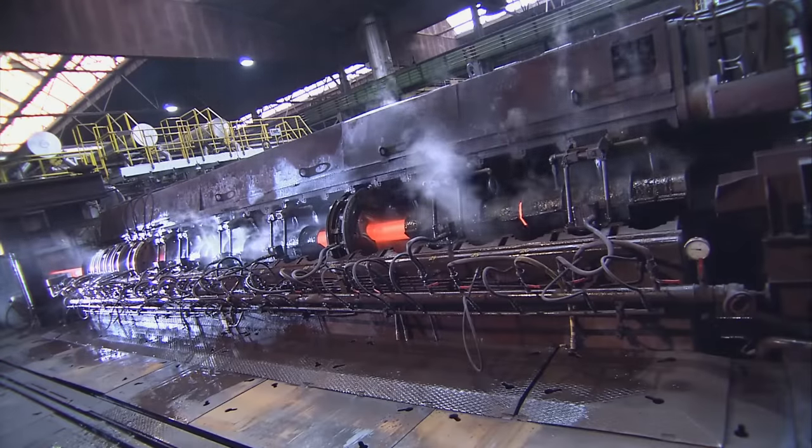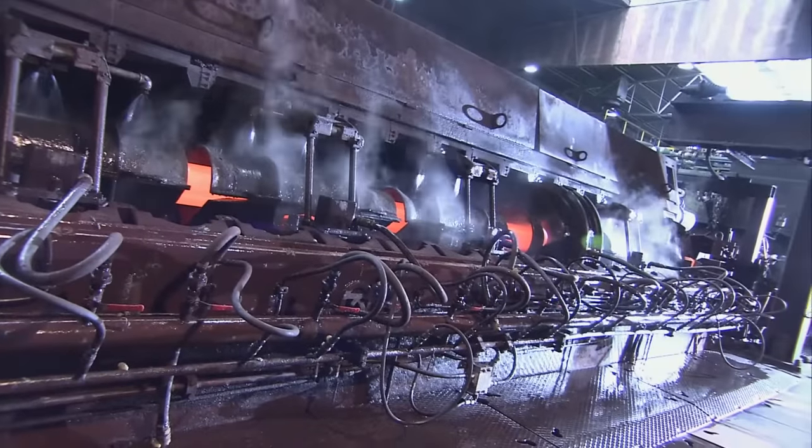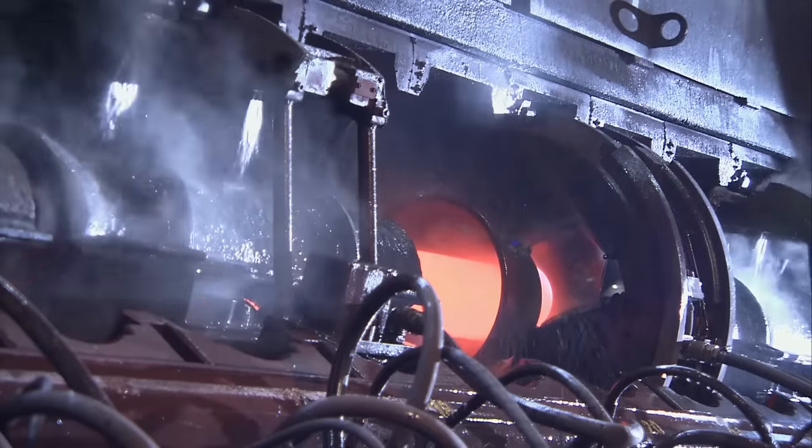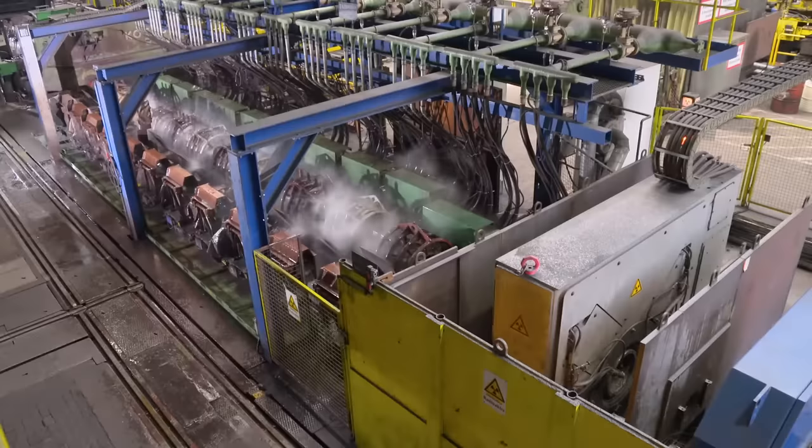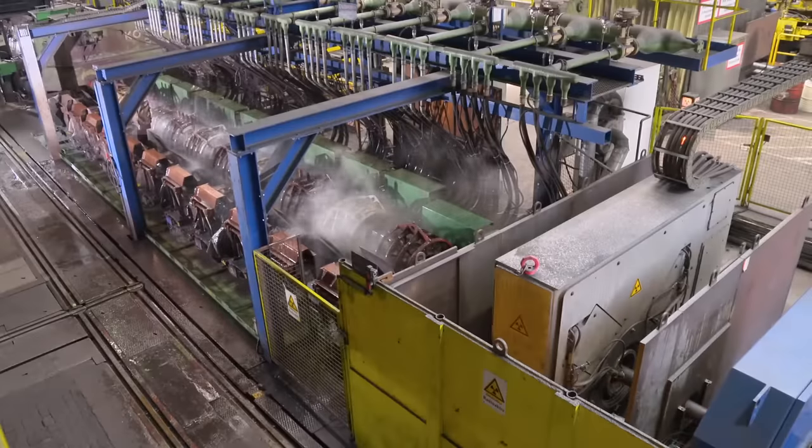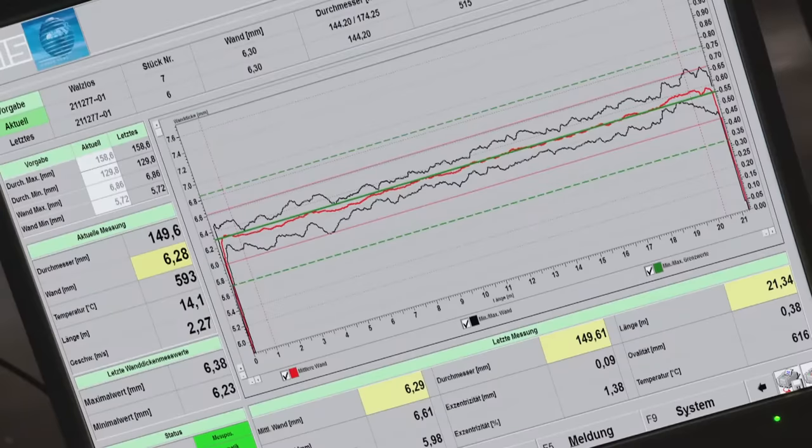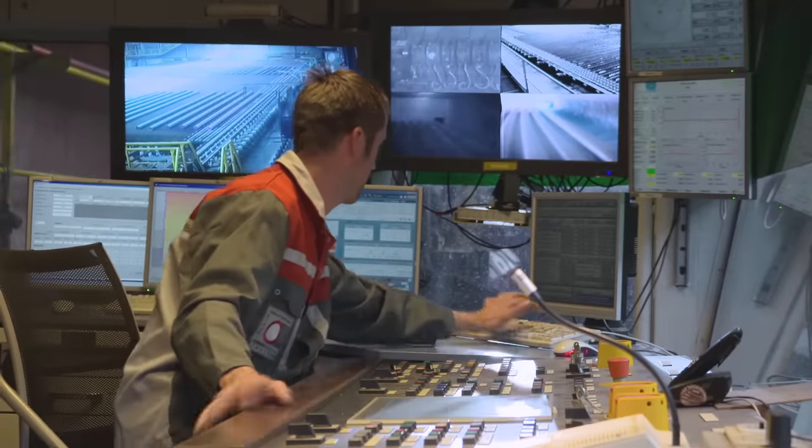The 28 stand stretch reducing mill gives the tubes their final geometry with defined diameters and wall thicknesses. After the rolling process the wall thicknesses are verified over the entire length using a radiometric gauge. The results of the inspection are graphically displayed, documented and used to control the rolling process.